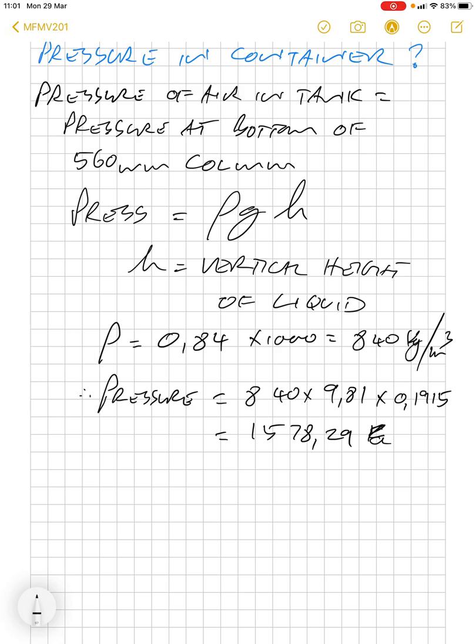You may be asking where does that 0.1915 come from. If we just draw a quick diagram, we have 70 degrees, that's 20 degrees, and this is our height h that we need.